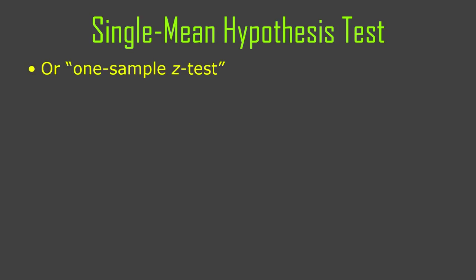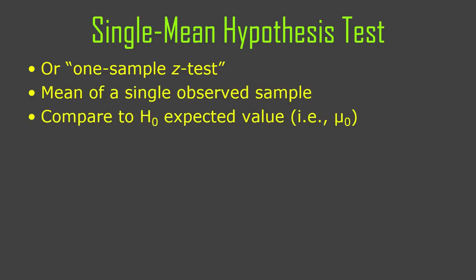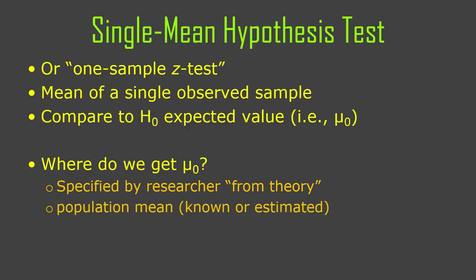This is sometimes called a one-sample z-test or single-sample z-test. We're going to take the mean of a single sample and compare it to mu zero, the expected value from the null hypothesis. That requires us to think about where we get mu zero from. We often hear people say it's specified by the researcher from theory, and that's not very satisfying. It took me a long time to work out what people were talking about. Well, this is what people usually do: they take a population mean that is known or estimated from somewhere else — and this has to come from outside your study.